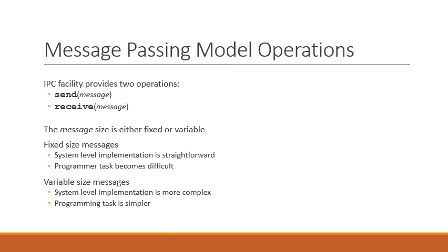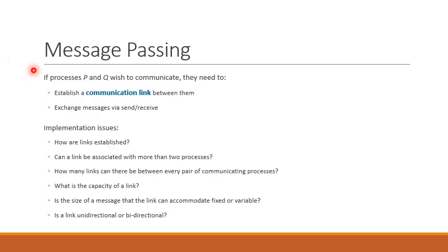In the variable-size message case, these two characteristics are reversed. System-level implementation becomes complex because system designers must now deal with variable message sizes. Whereas the programming task becomes simpler because programmers deal with variable-size messages directly. In message passing, suppose we have two processes, P and Q, that wish to communicate. In order to do so, they must establish a communication link between them, and after this they can exchange messages using send and receive operations.